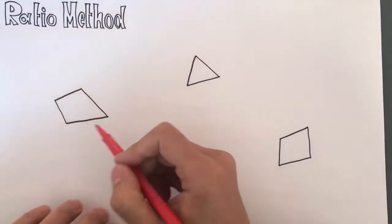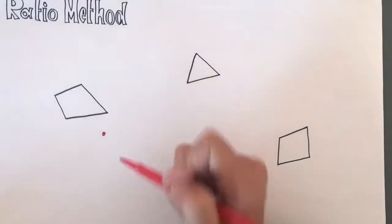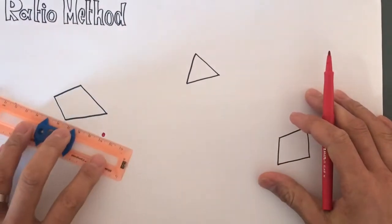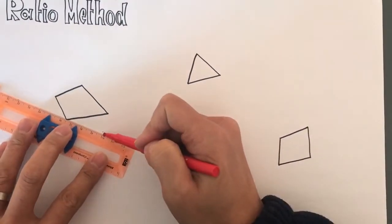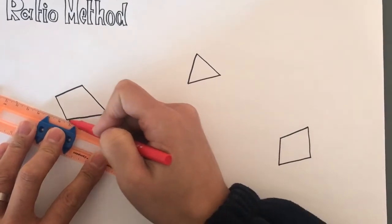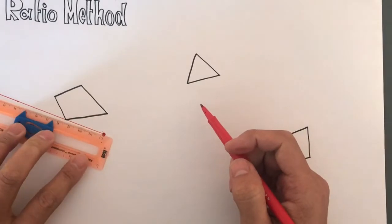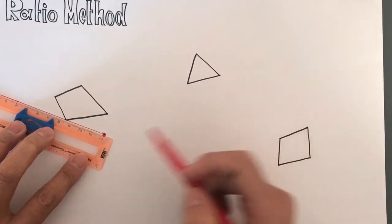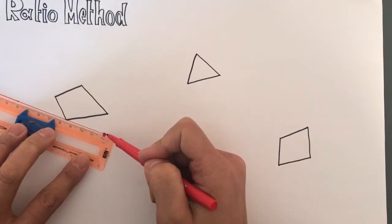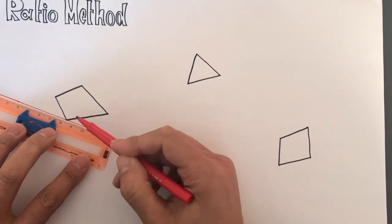Let's pick a center of dilation outside. Then the first step is to draw ray from the center passing through the vertex like this. And now you're going to measure the center to the vertex. It's about 3.5 centimeters.